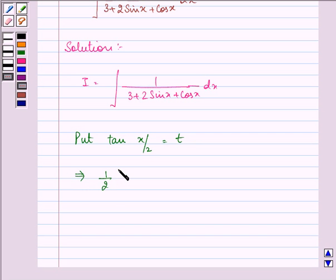1 upon 2 secant squared x by 2 dx equal to dt. That implies the value of dx is equal to 2 dt upon 1 plus t square since secant squared x by 2 can be written as 1 plus tan square x by 2 that will be 1 plus t square.